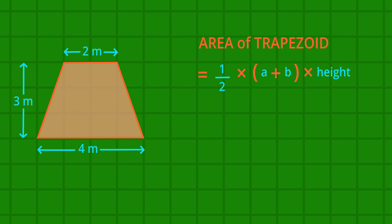Let's do an example. One half multiplied by the sum of two and four, and then multiplied by three. The area of this trapezoid is nine square meters.